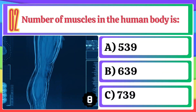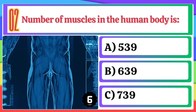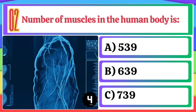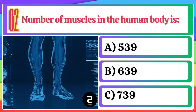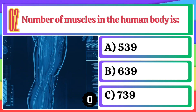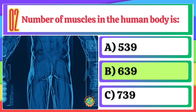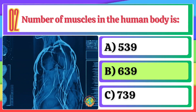Number of muscles in the human body is: A) 539, B) 639, C) 739. The correct option is B, 639.